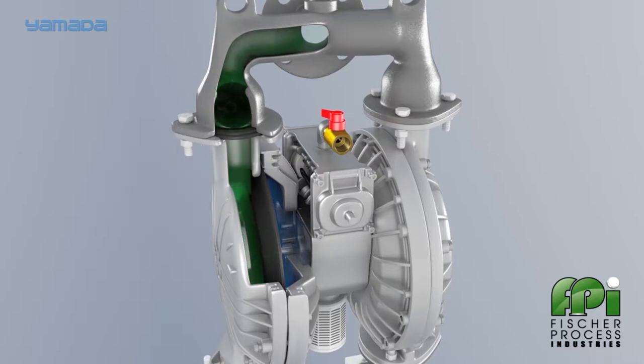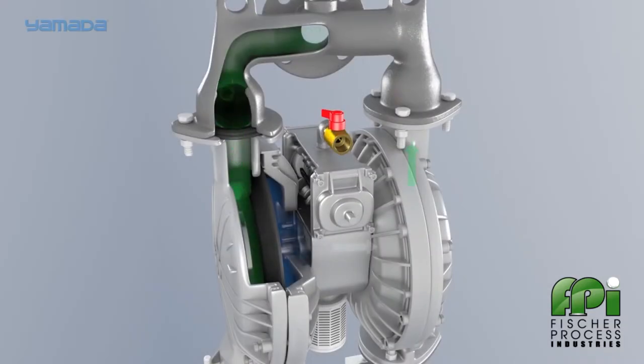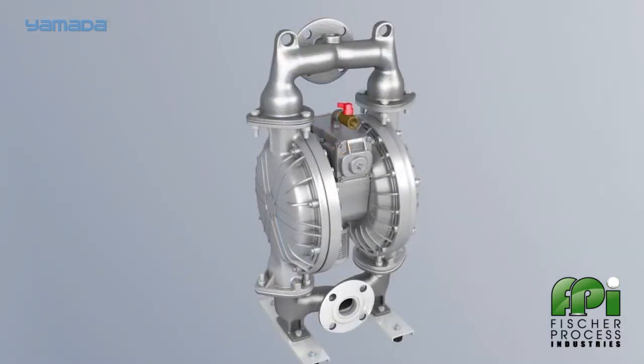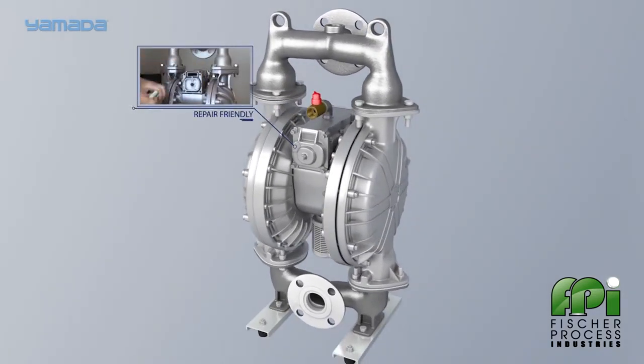The open port allows compressed air to exhaust from the back side of the air valve. The pressure drop produces a shift of the main air valve. This motion simply repeats on the other side. Our air valve is outside accessible for easy inspection and is completely repair friendly.